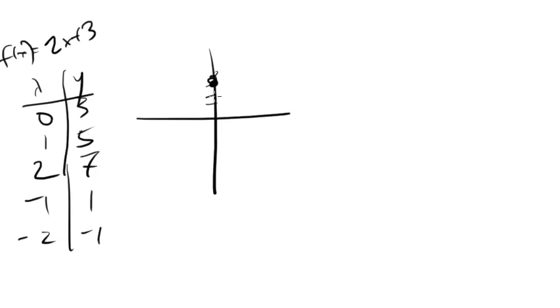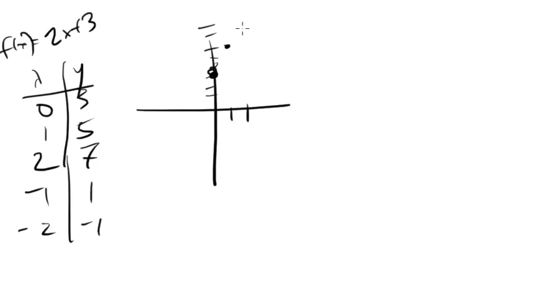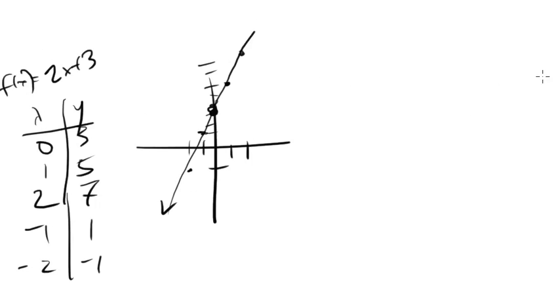So 0, 3, 1, 5, 2, 7, negative 1, 1, negative 2, negative 1, and you can see I'm forming a line. And this is the graph of the function f of x, f of x equals 2x plus 3.